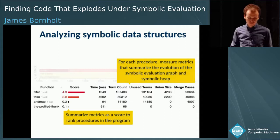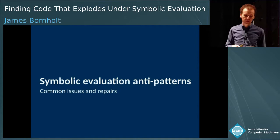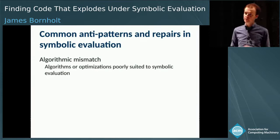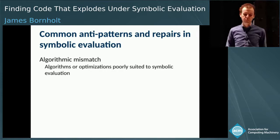Once you've found a problem using the profiler, how do you fix it? To help with that, we collected a set of anti-patterns — things that often go wrong in symbolic evaluation tools. We found three common anti-patterns. The first is what we call an algorithmic mismatch: algorithms and optimizations that make sense in concrete code might actually make things worse in the symbolic context when you're doing all-paths execution. Let me show you an example briefly.